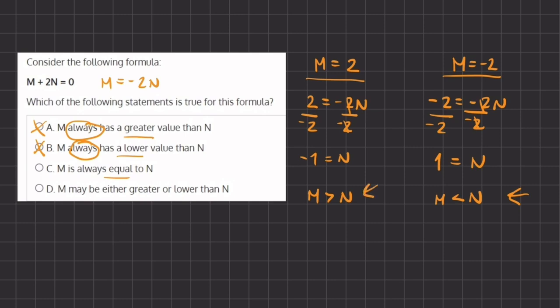Now let's move onto option c, which states that m is always equal to n. Well, this is not true because we saw in both cases, when m equals 2 or negative 2, the values are not equal, and m is either greater than n or lower than n.